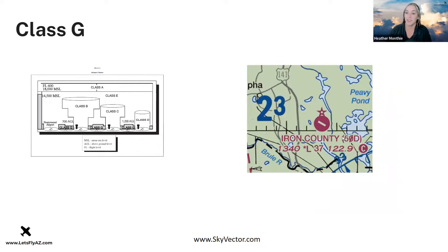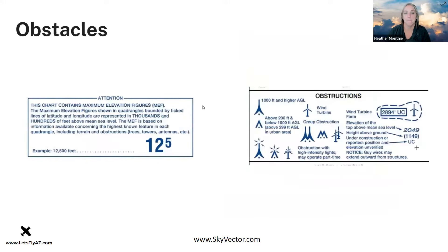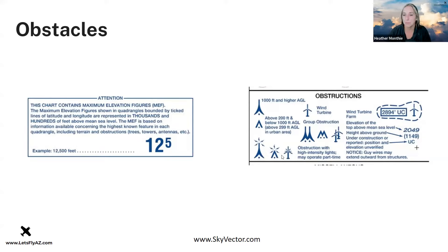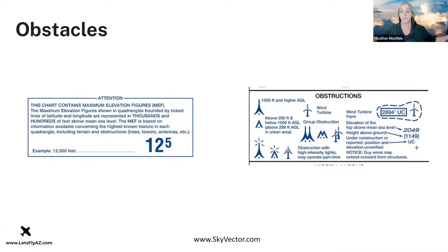Rhinelander has a Class E surface transition area identified by dotted magenta lines. Class G airspace has no lines around it — Iron County airport, for example, is in Class G. Different obstruction symbols indicate height: 1,000 feet or higher above ground versus 200 feet up to below 1,000 feet. Important to note: many towers have guy wires extending outward — if you're doing an off-field landing near a tower, be aware of those guy wires.